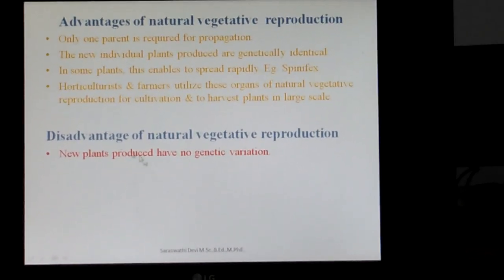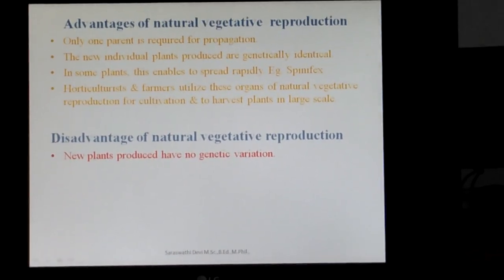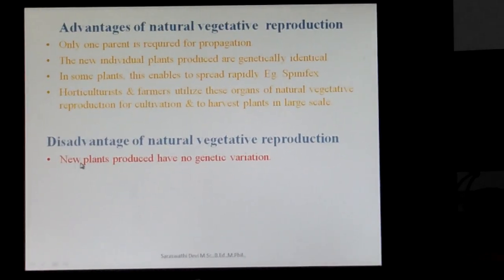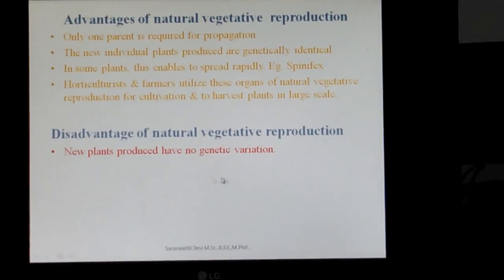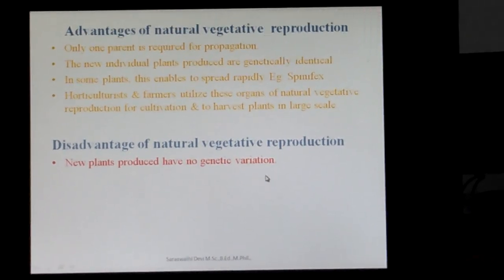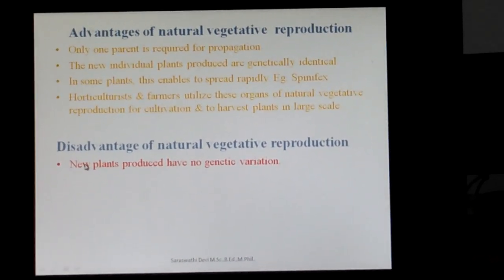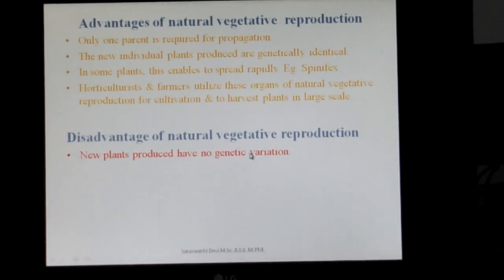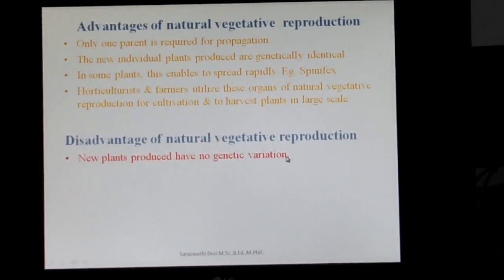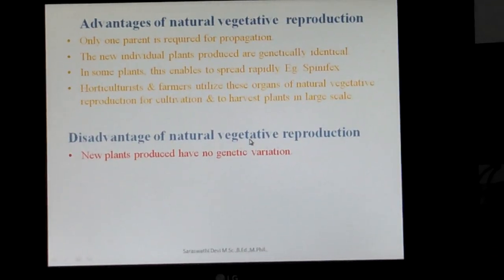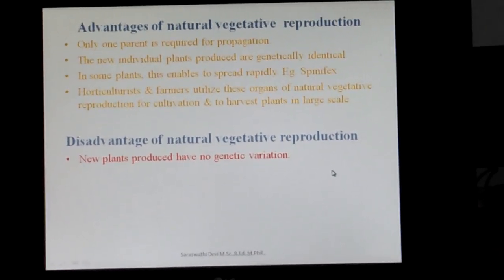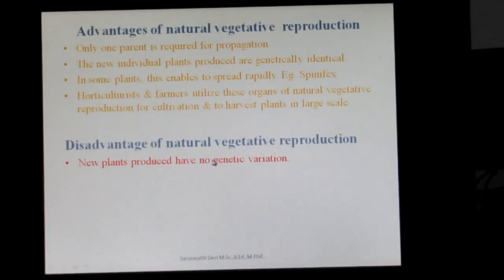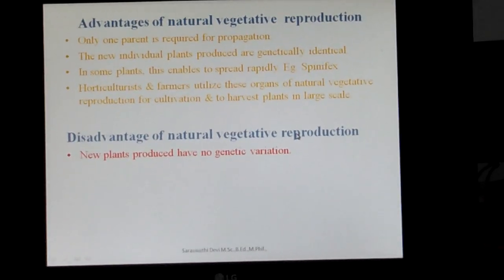The disadvantage of natural vegetative reproduction is that there is no genetic variation. The new plants produced have no genetic variation, because whatever characters the mother plant has, the same characters are passed to the next generation. So there is no genetic variation shown.